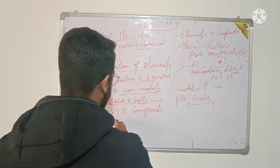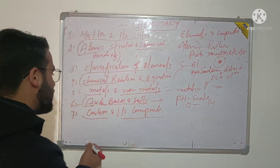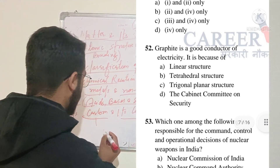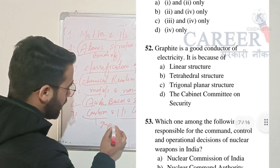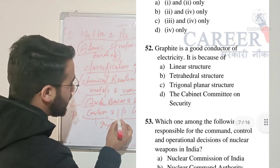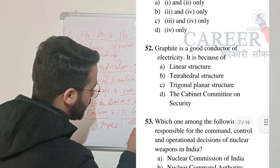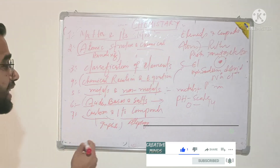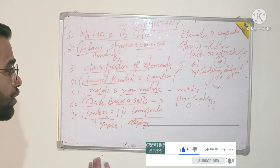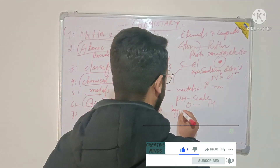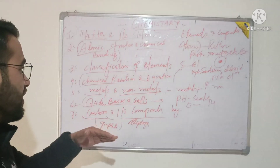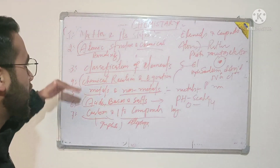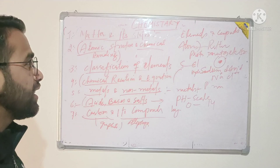Finally, you will study carbon and its compounds. You can also find carbon and its compounds questions in the exam paper. You will study the allotropes of carbon such as graphite and diamond. You will also study compounds of carbon like hydrocarbons, including saturated and unsaturated hydrocarbons. These are the seven topics you will cover in chemistry.